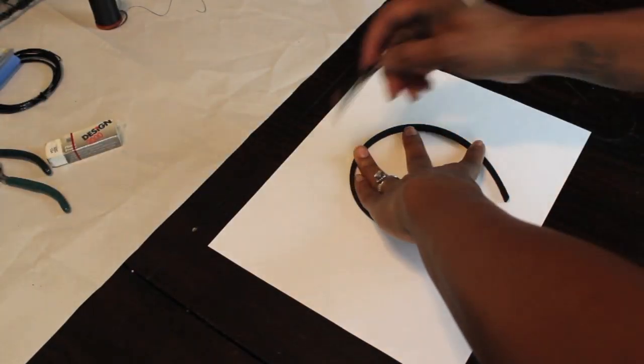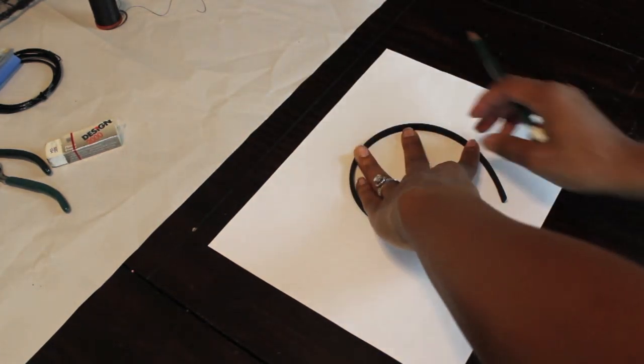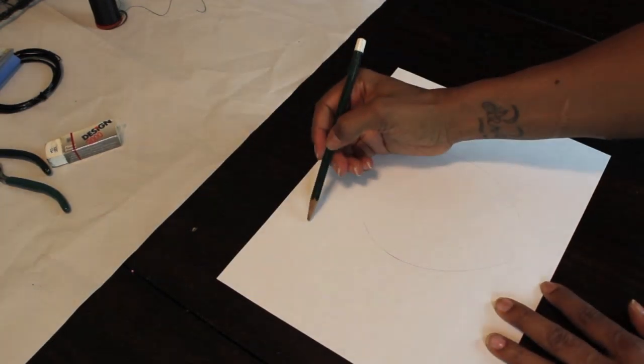First you're going to take your headband on a white piece of paper and trace it out. After you're done tracing it out, you're going to work on placing the cat ears.